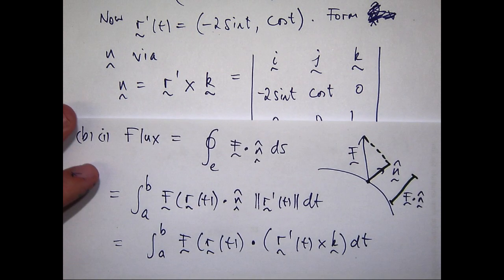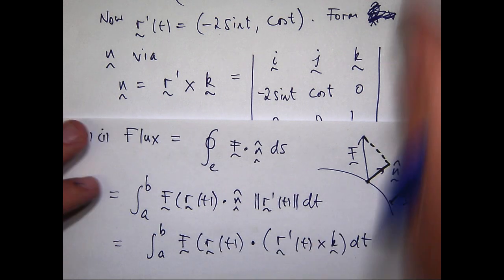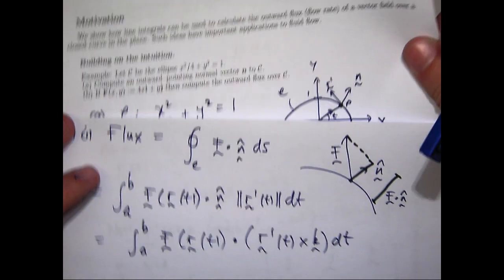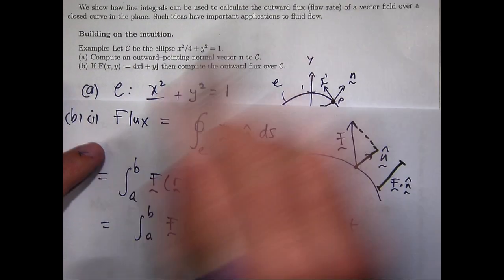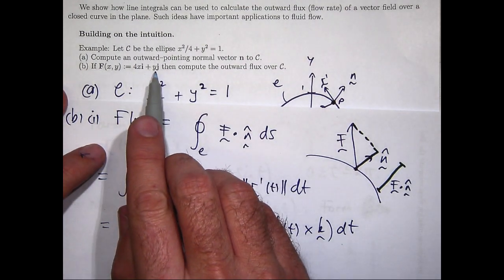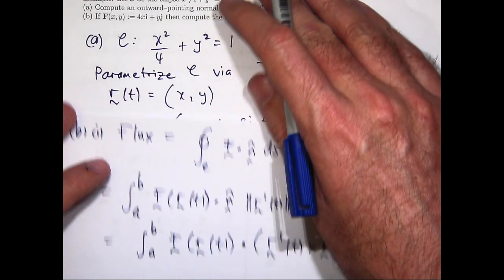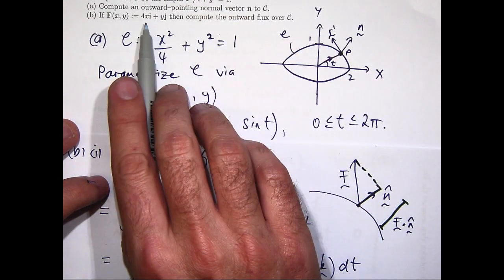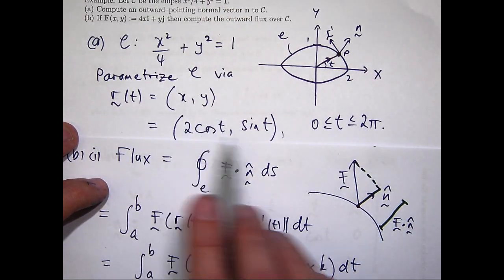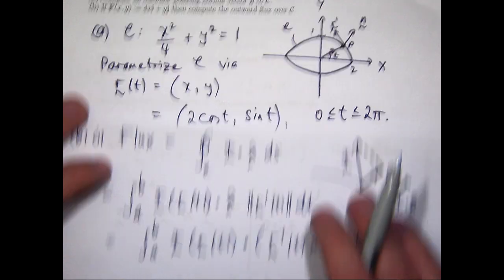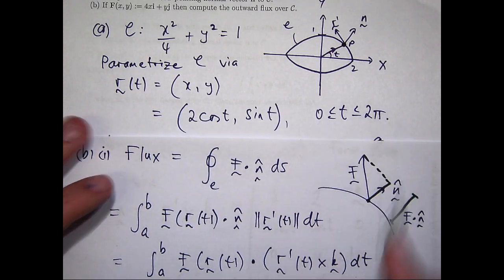Okay? So we computed this part in part a, all we have to do is compute this part. So our vector field here is 4xi plus yj or 4x comma y. Let's go up there and replace x with 2 cos t and y with sin t. And we'll be integrating from 0 to 2 pi.